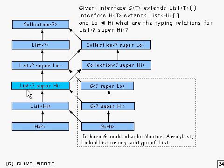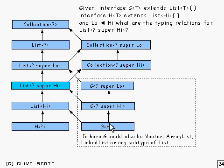The other way to go, of course, is the normal sort of subtyping rules with G. So where you've got a list of something, you could have G of the same thing. It's only the inner wildcard bit which is the contravariant bit — the rest is normal subtyping. So we've got the same thing duplicated down here with the same sort of relationship between them. G, don't forget, could be Vector, ArrayList, LinkedList, or any subtype of List. Similarly, we could go up any of these points — we could have a Collection of something which is super High, or a Collection of something which is super Low, and the same sort of relationship applies there.